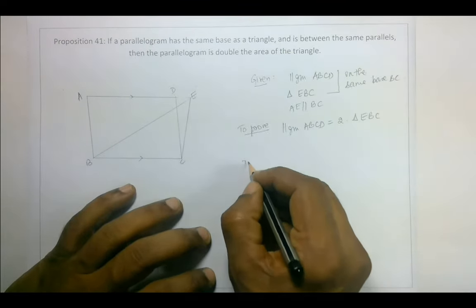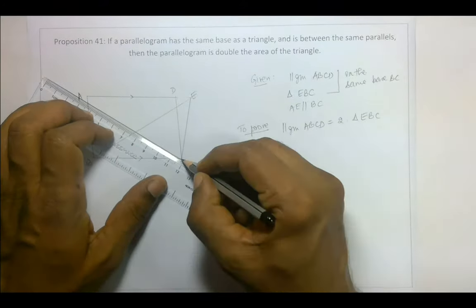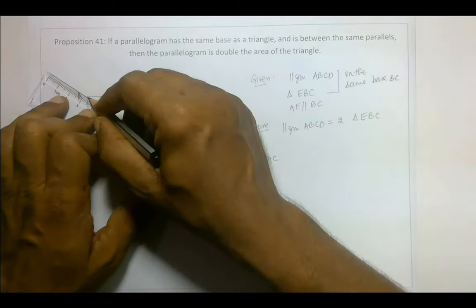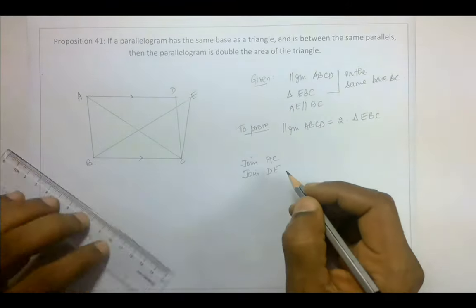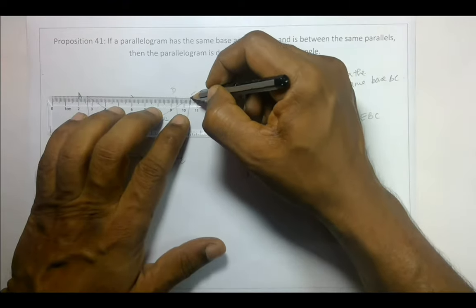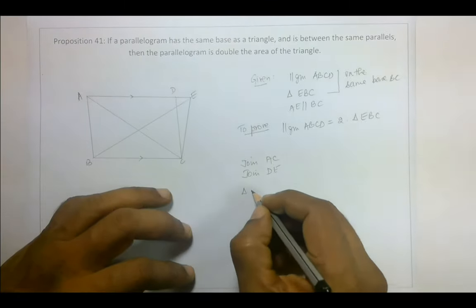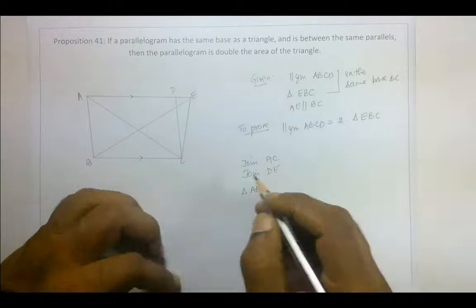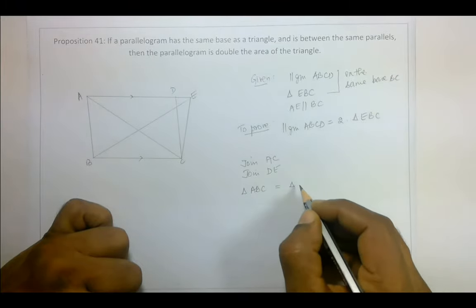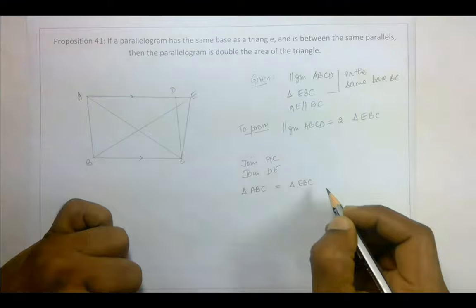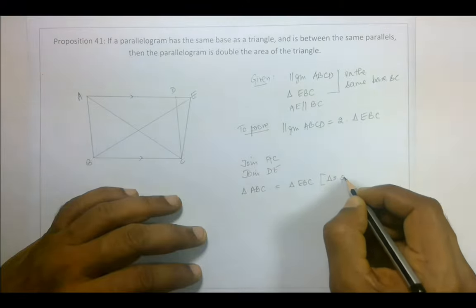Let's join this, and join B and E. So let's join this as well. Now triangle ABC is going to be equal to triangle EBC. Why? Triangles on the same base and between same parallels.